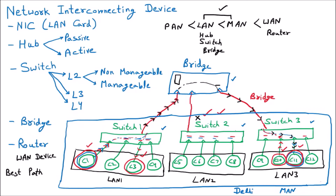Now, what if I want to communicate with Gurgaon also? Every network has a router when we are talking about the wide area network. The router is shown by a circle with a cross inside it. Let us suppose this is Router 1, the router of Delhi.